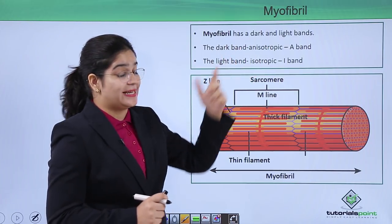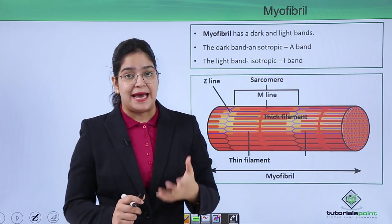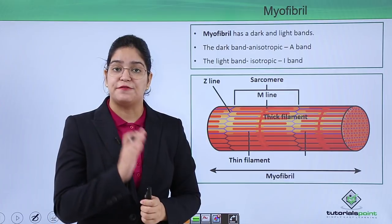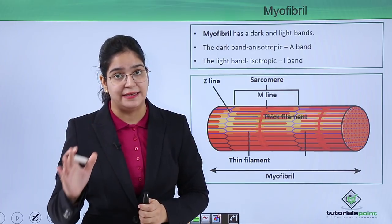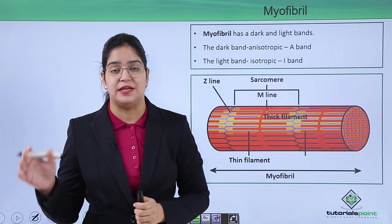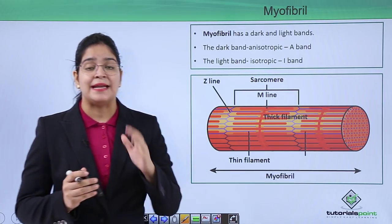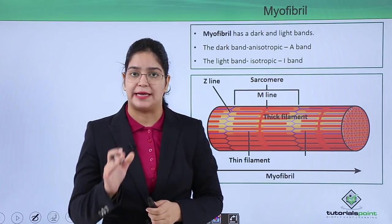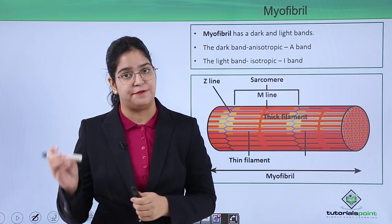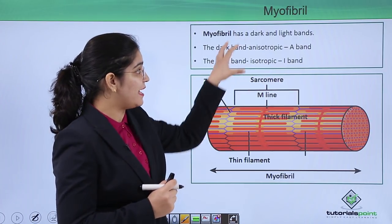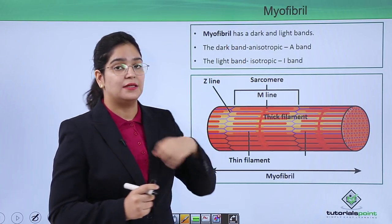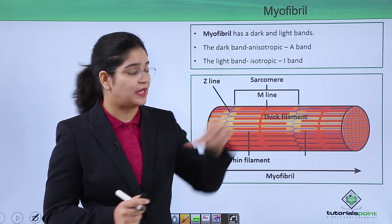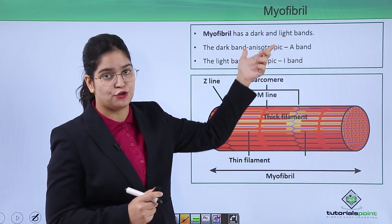It is called anisotropic because it has a different refractive index in different planes. Isotropic has the same refractive index in different planes. That is why they are given different names: A for anisotropic, I for isotropic.